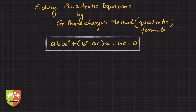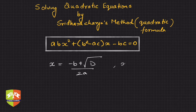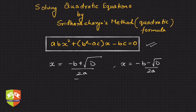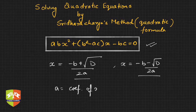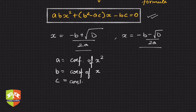Before that, let's revise what Sridharacharya's rule is. The solution to a given quadratic equation will be of the form x equals minus b plus under root D upon 2a, and x equals minus b minus under root D upon 2a. Now, don't get confused with the a and b in the equation and the a and b in the formula. In the formula, a is the coefficient of x², b is the coefficient of x, and c is the constant term.